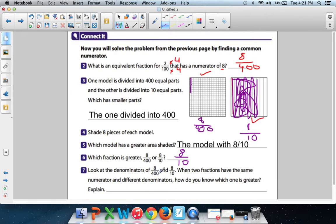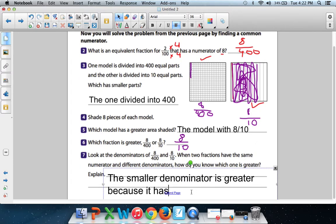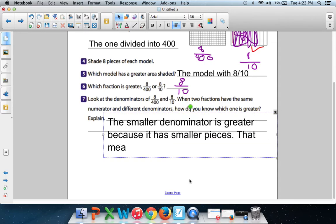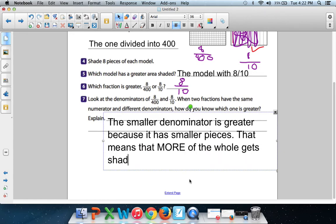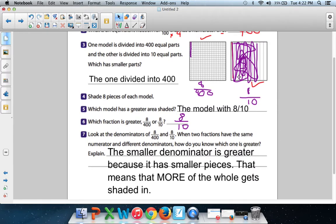Look at the denominators, the bottom numbers, of 8 over 400, 8 over 10. When two fractions have the same numerator and different denominators, how do you know which one is greater? Explain. The smaller denominator is greater because it has... Uh-oh. Gonna have to extend this page a little bit. Because it has smaller pieces. That means that more of the whole gets shaded in.